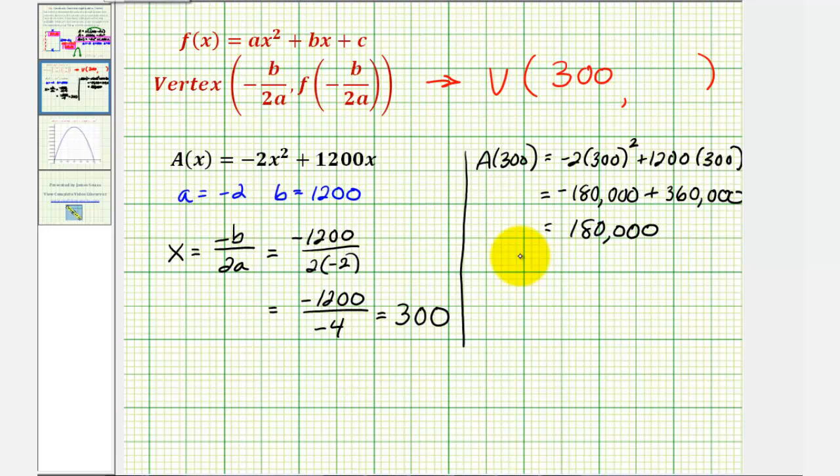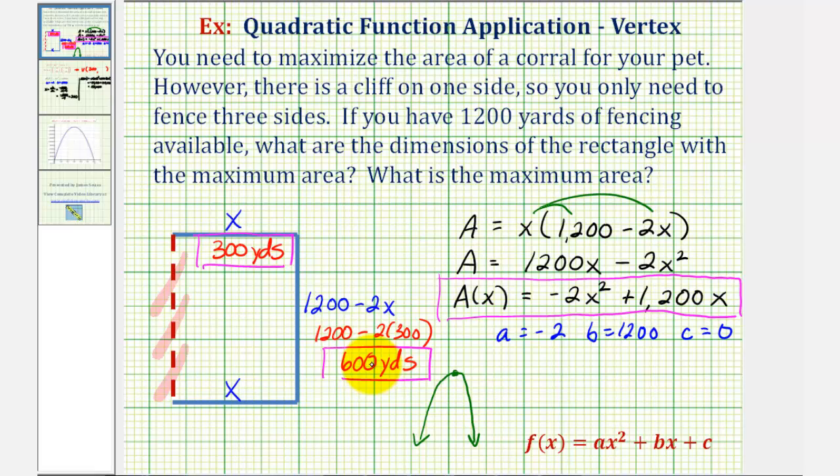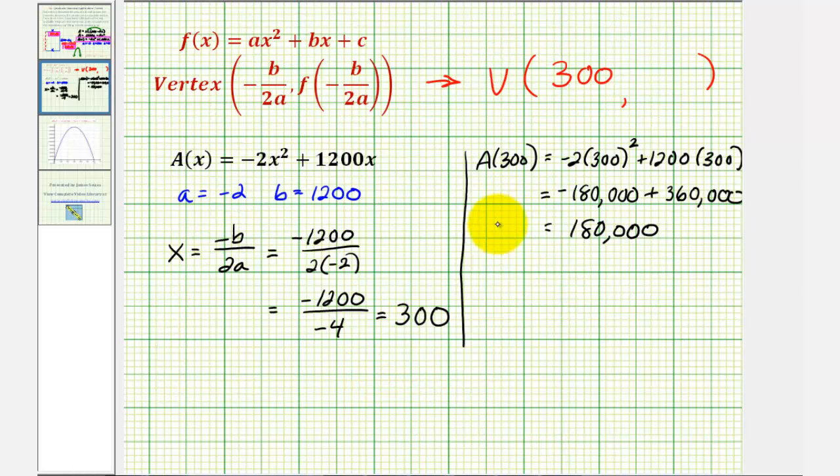And again, just to compare, using the rectangle, we know the area would just be 300 times 600 square yards. And of course, 300 times 600 is 180,000.